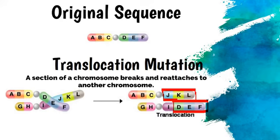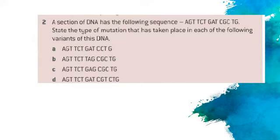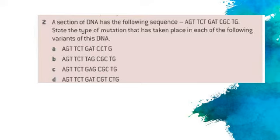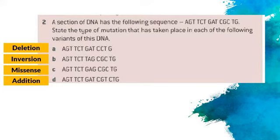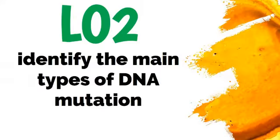Let's put this into practice. Have a look — a section of DNA has the following sequence. State the type of mutation that has taken place in each of the following variants. Compare your original sequence right next to all of the others and work out what type of mutation has happened. Looking through: in our first one, we notice that there is a deletion mutation — one of the bases has been removed. In the next one, we have an inversion mutation where a section has broken off and swapped around. Then we have a missense mutation, followed by an insertion mutation where a single base has been added.